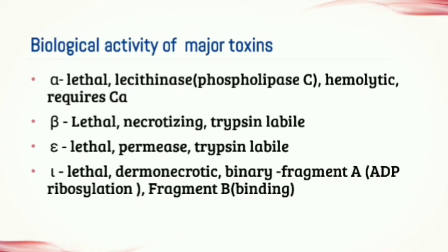The alpha toxin is responsible for gas gangrene and myonecrosis in infected tissues. The toxin possesses hemolytic activity and lecithinase activity, which is a phospholipase C that acts upon lecithin and splits the phospholipid lecithin. Alpha toxin is a lethal toxin and requires calcium for its activity. The beta toxin is one of the four major lethal toxins — it is a lethal, necrotizing agent and trypsin-labile. The beta toxin is sensitive to trypsin, which can completely inhibit trypsin activity, affecting digestion of proteins.